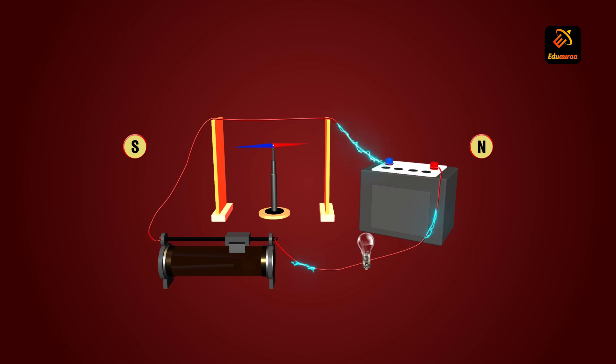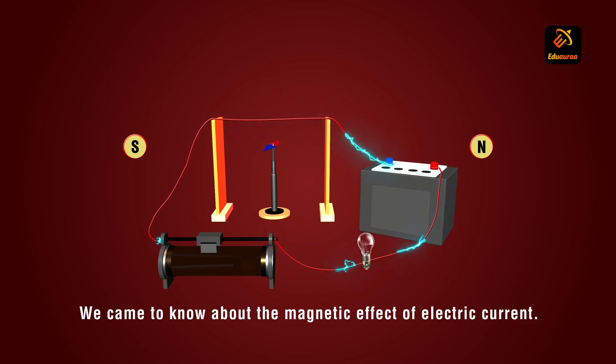Now this was all by chance. Somehow he came to know that there was a direct relation between the current in the conductor and the deflection of the compass. And hence we came to know about the magnetic effect of electric current.